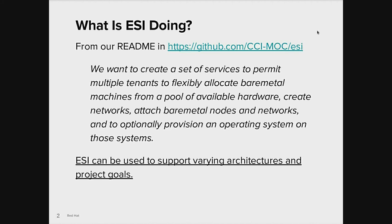So what is ESI doing? Well, from our README, we want to create a set of services to permit multiple tenants to flexibly allocate bare metal machines from a pool of available hardware, create networks, attach bare metal nodes and networks, and to optionally provision an operating system on those systems. One key thing to note is that ESI does not compel users to a specific service architecture. You can put the pieces together yourself to support your own architectures and project goals.